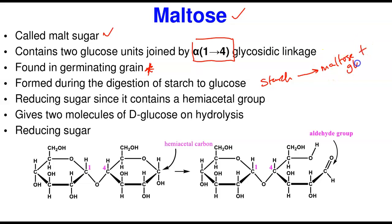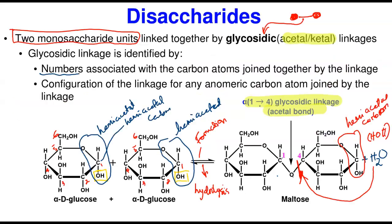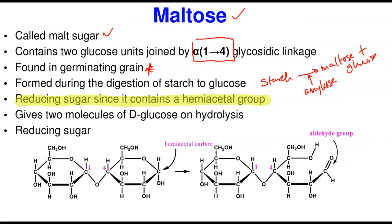The saliva secreted by the salivary glands contains salivary amylase, also called ptyalin, which breaks down cooked starch into maltose and some glucose molecules. Maltose is a reducing sugar because it contains a hemiacetal carbon — even after formation it still has a free hemiacetal carbon, therefore it is a reducing sugar.